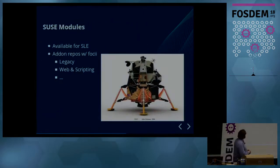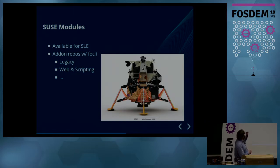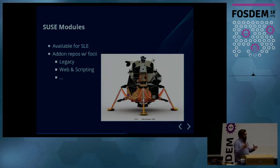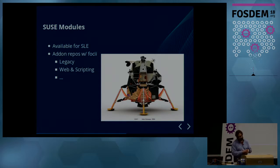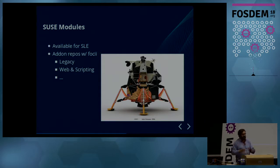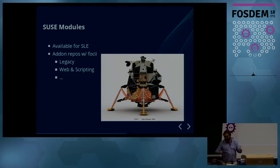Then there are SUSE modules — and I'll tell you, the word 'module' is the worst thing to use for anything. It's currently only available for the paid SUSE subscription, but they make what they call modules available: extra repos with a focus on some particular thing. Legacy is one, web and scripting languages is another, and there are about six or seven more. They're extra repositories with extra RPMs making different versions of things available, keeping their core distribution small and tight with different life cycles for these extras.